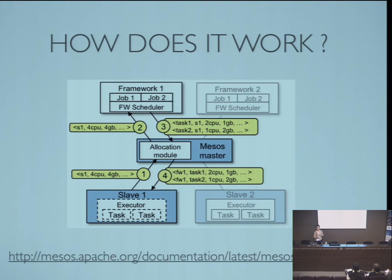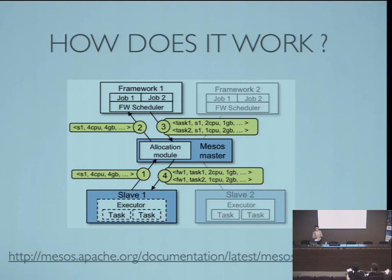First, a slave tells the master: I have these resources — two CPUs, four gigabytes of memory. Mesos offers these resources to a framework. The framework can say: I want these resources, and here are the tasks I want to launch on them. The master then takes these tasks and launches them on the slaves.